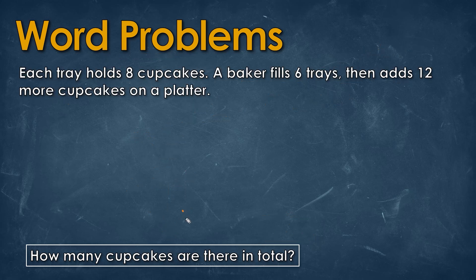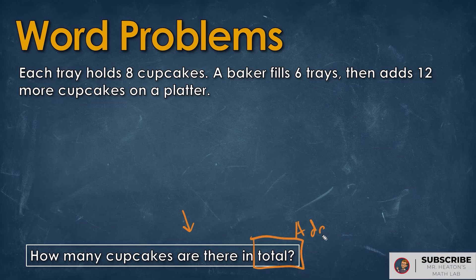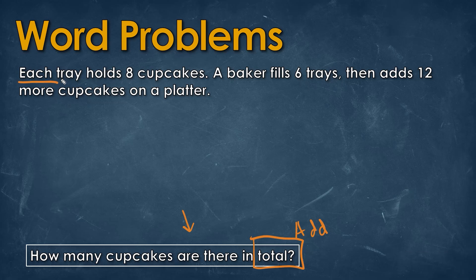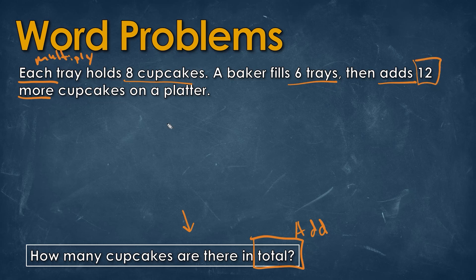The next question asks how many cupcakes there are in total. The word 'total' tells us we'll be adding at one step. Reading the question, we see 'each,' meaning multiplication, and 'more,' meaning addition. Each tray holds eight cupcakes, a baker fills six trays, then adds 12 more cupcakes. So we multiply eight by six to get 48.